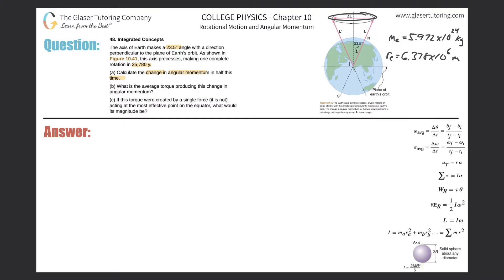So a precession means that this axis moves from this point and rotates around this axis. It rotates around that central axis, and it takes 25,780 years to do so. So what we need to find is we need to find the change in angular momentum in half the amount of time. So we are looking for then this vector.